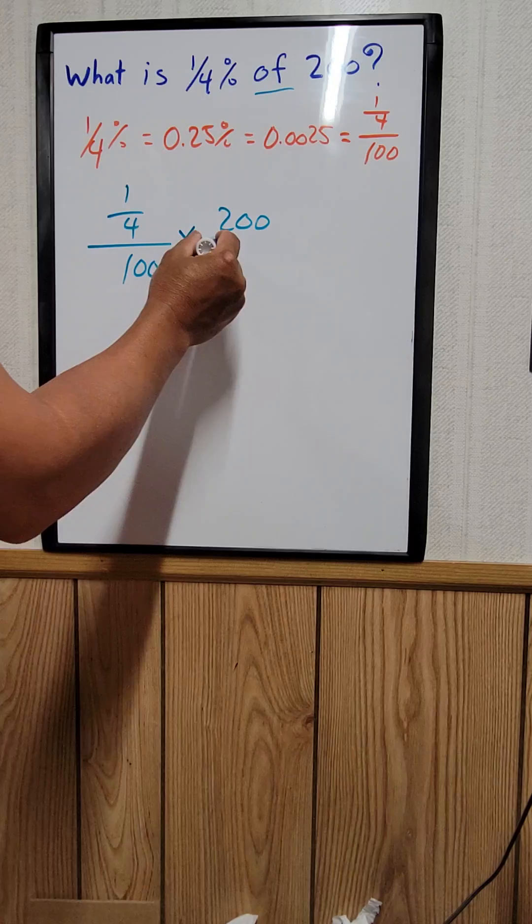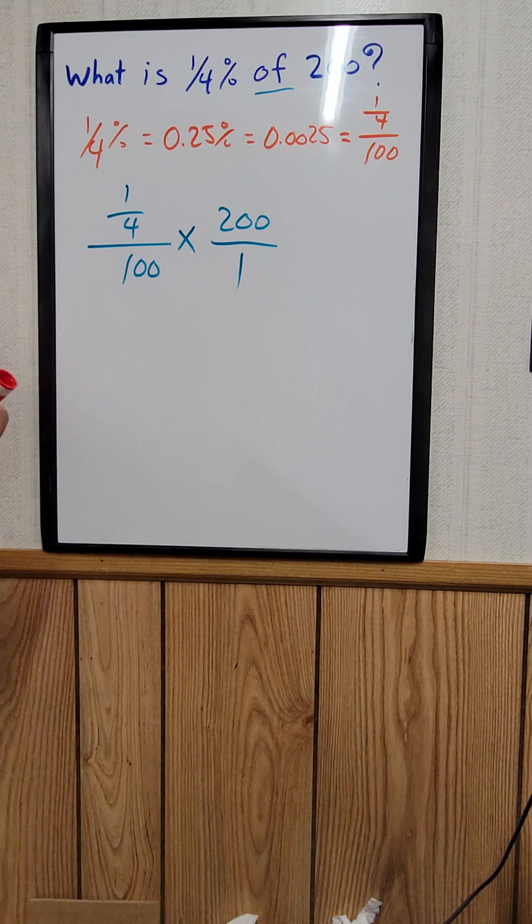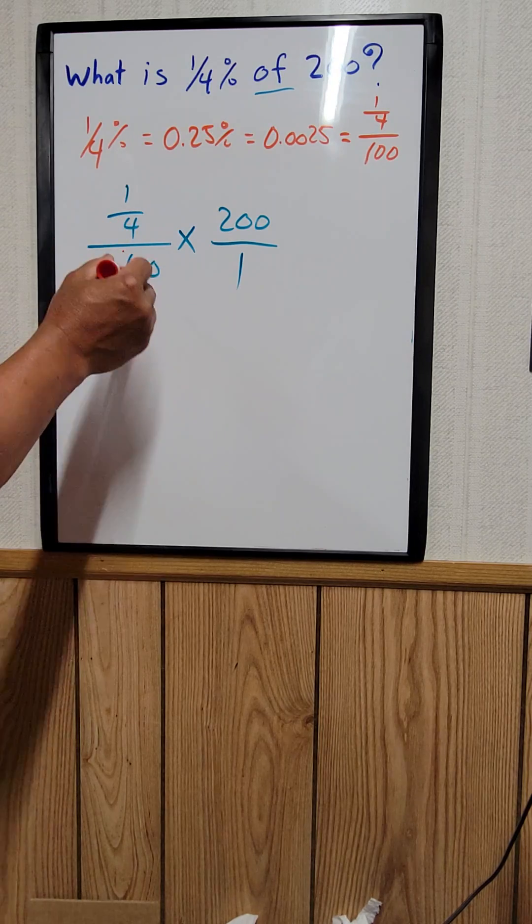two hundred over one, the same thing. You can set it up as proportion, and then we can use cross-cancellation.